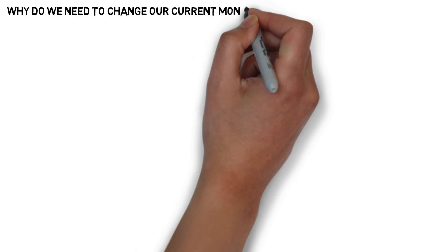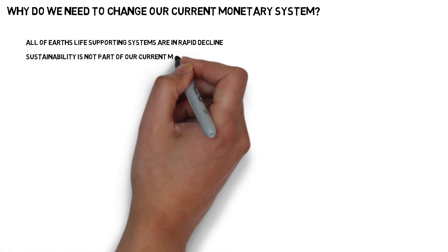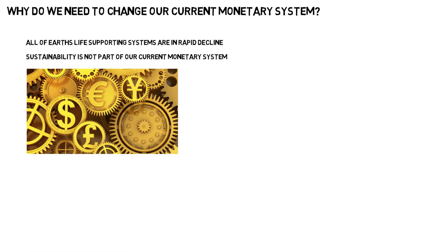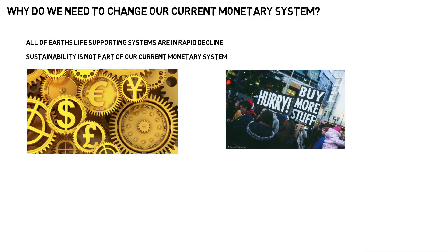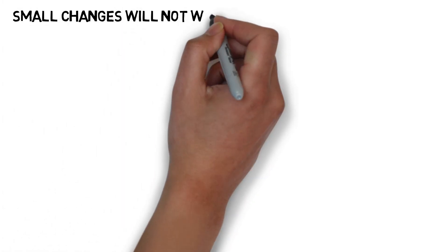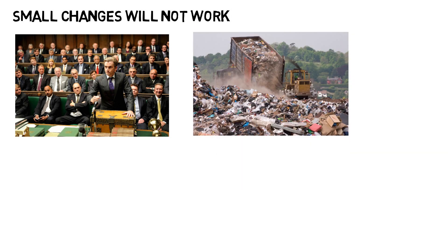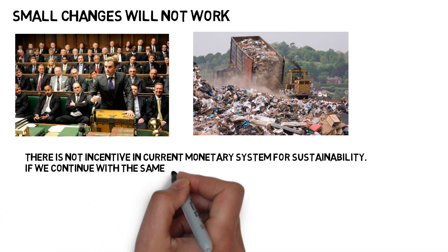So why do we need to change our current monetary system? Data shows that Earth's life-supporting systems are rapidly declining — 50% of all wildlife has been destroyed in the past 40 years alone. Sustainability is not part of the current monetary system; in fact, the current monetary system is dependent on constant consumption. If we don't change the system, we will end up destroying the habitat, and this might lead to the destruction of our species. In spite of all the good intentions that politicians have in trying to find solutions for pollution by imposing regulations, it is wishful thinking that small changes inside the system will resolve the global pollution problem. There is no incentive in the current monetary system for sustainability. If we continue the same way, with the same approach, we will get the same result.